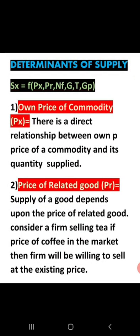Next we come to determinants of supply. The supply function is: SX = F(PX, PR, NF, G, T, GP). Here SX means supply of commodity X, F is the functional relationship, PX is the own price of the commodity, PR is the price of related goods, NF is the number of firms, G is the goal of the firm, T is the state of technology, and GP is government policies.